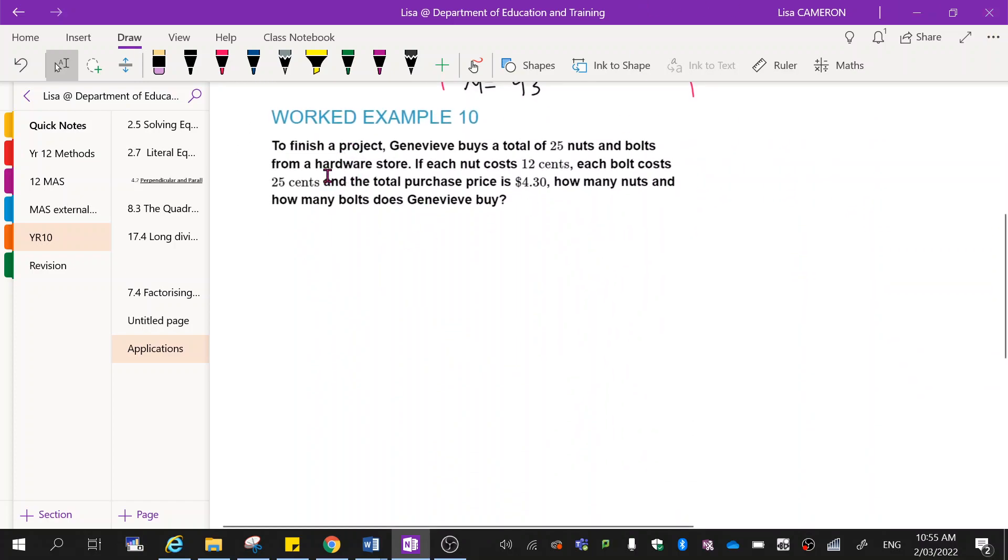To finish a project, Genevieve buys a total of 25 nuts and bolts from a hardware store. If each nut costs 12 cents, and each bolt costs 25 cents, the total purchase price is $4.30. How many nuts and how many bolts does Genevieve buy?